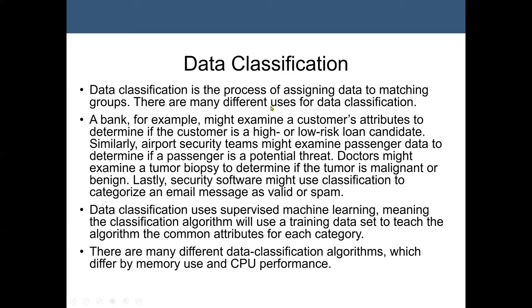Data classification is the process of assigning data to matching groups. There are many different uses. For example, a bank might examine a customer's attributes to determine if the customer is a high or low risk loan candidate. Most loan decisions in banks are not made by a person — they are made by data mining and machine learning model systems.